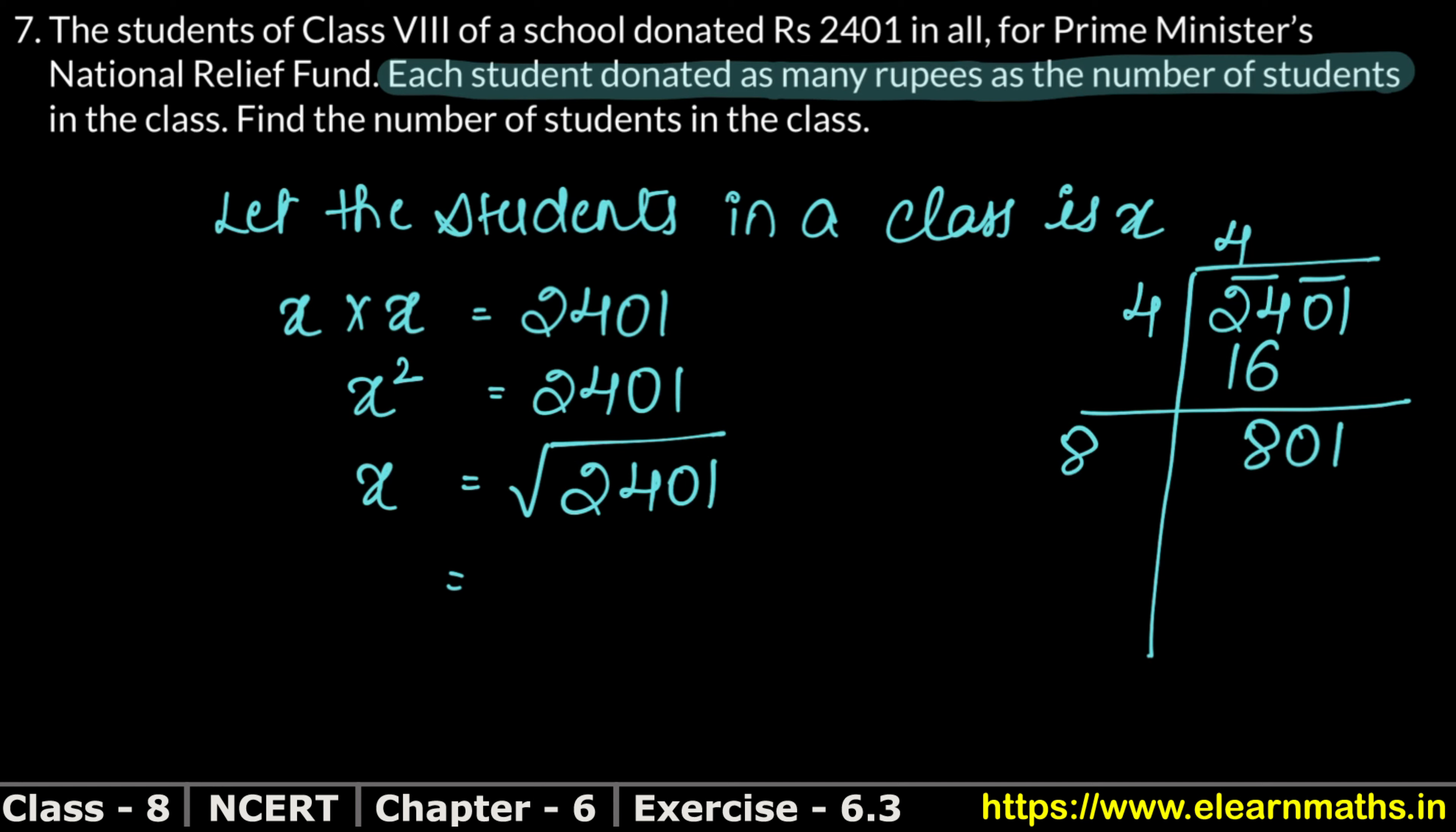Now how much is it? If I have 1, 1 is unit digit. 1 times 1 is 1, so it will be 81. So this is not possible. Next what is it? It'll be 89. 9 times 9 is 81, 9 times 8 is 72 plus 8 is 80. So this will be 9 times.